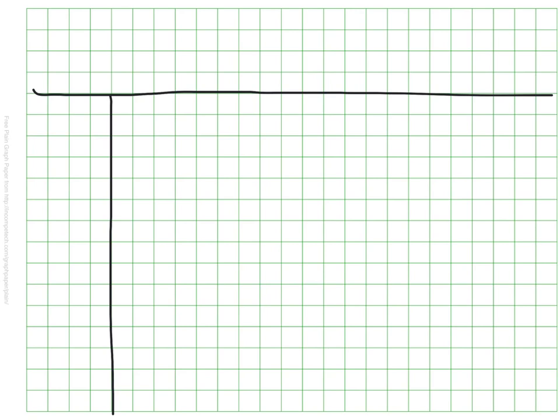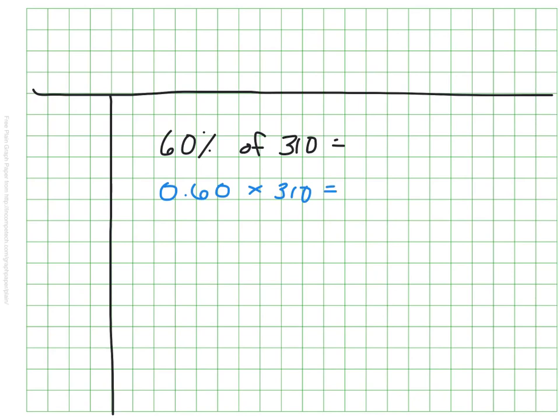Let's try a few more before we finish this video. We'll practice this more in class, but let's give this a try here. This one might be a little less obvious with mental math. Take a moment and set up 60% of 310. You're going to want to write this as a decimal and then multiply it by 310. Go ahead and calculate it for yourself — pause the video — and then we'll see how you did.